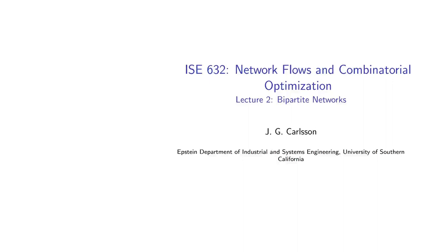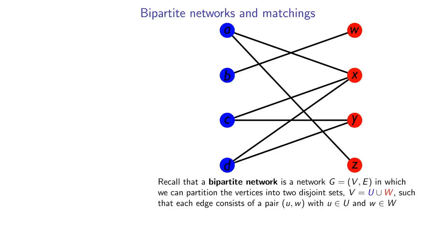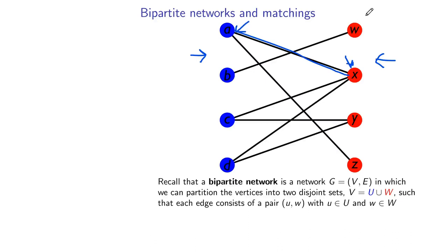Bipartite networks — these are really useful and have a lot of beautiful theory attached to them. We talked about bipartite networks before. It's a network where you have some nodes on the left and some nodes on the right, and all of the edges connect things on the left to things on the right. The point is just that every edge connects a thing in one kind of class to a thing in another kind of class.